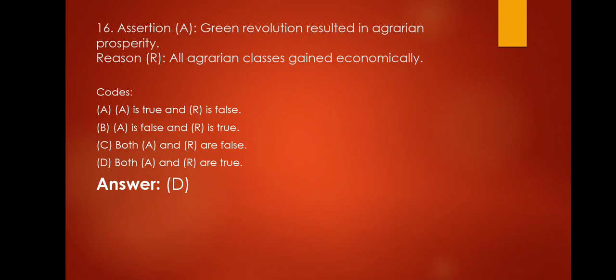Assertion: Green revolution resulted in agrarian prosperity. Reason: All agrarian classes gained economically. The codes are given. Option A: A is true and R is false. Option B: A is false and R is true. Option C: Both A and R are false. Option D: Both A and R are true. Here the correct answer is Option D. That is both A and R are true.